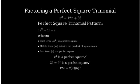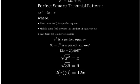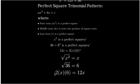For the middle term, 12x, we need to check if it's twice the product of the square roots of the first and last terms. Let's verify the middle term. The square root of x squared is x, and the square root of 36 is 6. Twice their product would be 2 times x times 6, which equals 12x. So yes, our middle term fits the pattern.